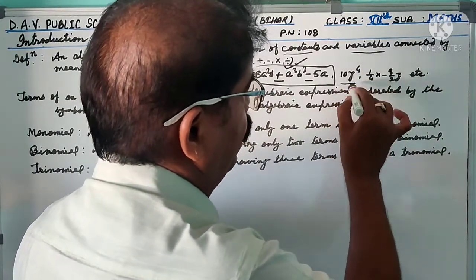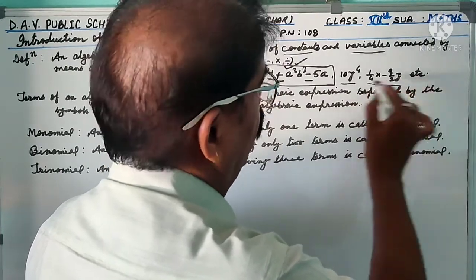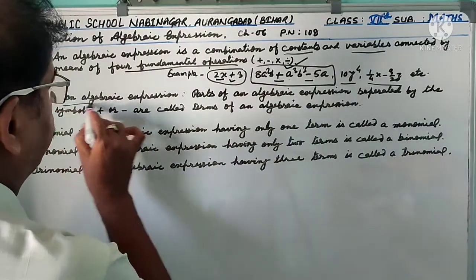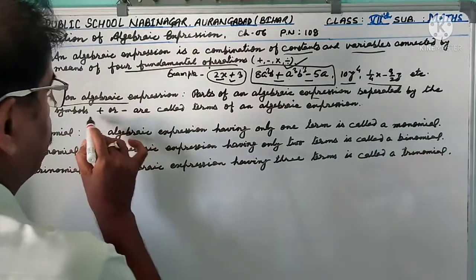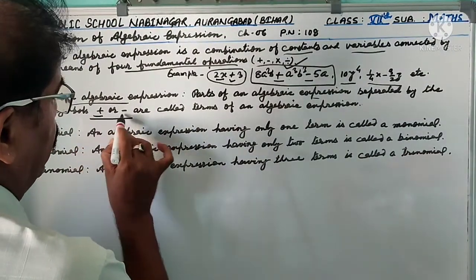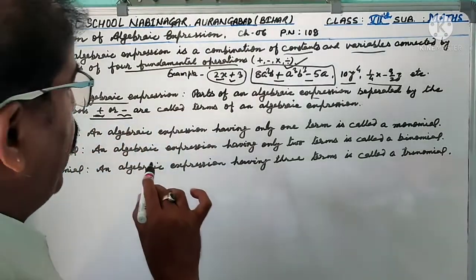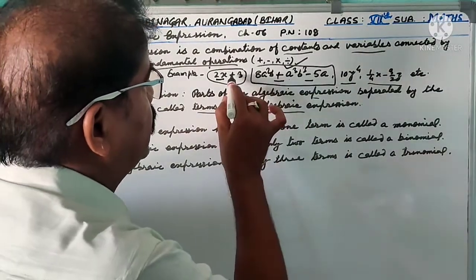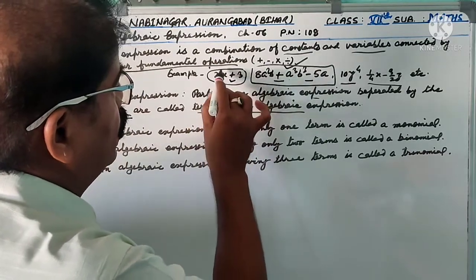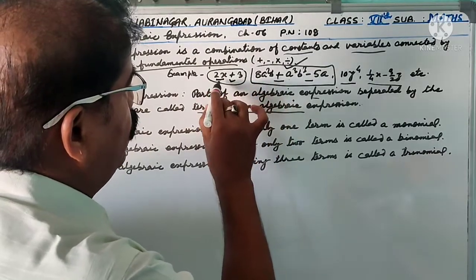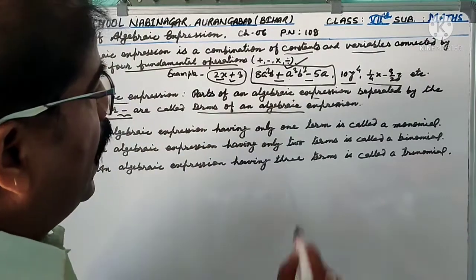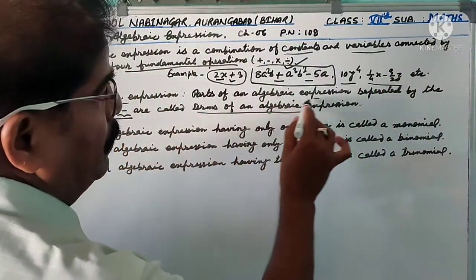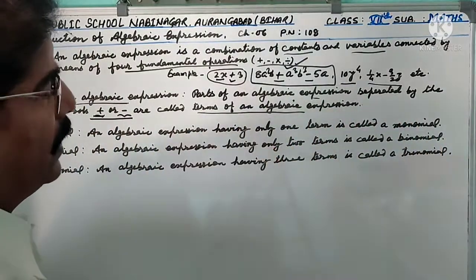Likewise, y⁴, (1/4)x − (3/2)z — all are algebraic expressions. The terms of an algebraic expression are the parts separated by the symbols plus and minus. That means, parts of an algebraic expression separated by plus or minus are called terms. For example, in 2x + 3, the plus sign separates 2x and 3, so 2x is one term and 3 is another term.